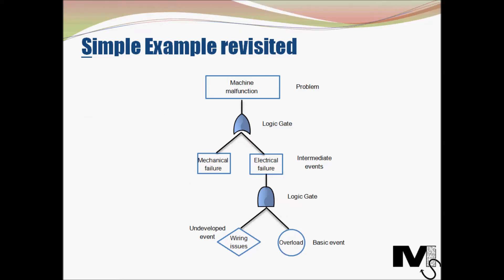So the top level event or the problem that we are going to investigate here is the malfunction of a machine. We understand that this could either be because of a mechanical failure or electrical failure. Those are the two components we have identified to be responsible for the machine malfunction. So we separate these two out using an OR gate. A mechanical failure or an electrical failure can both lead to machine malfunction. So an OR gate essentially means that either input can actually result in the output.